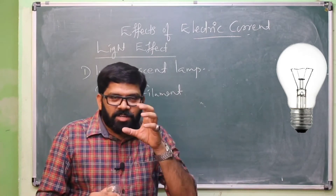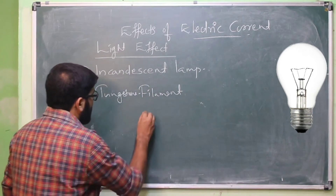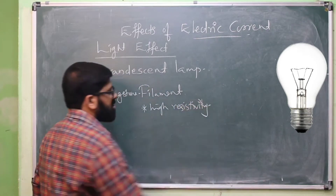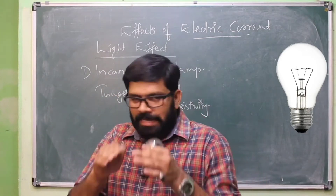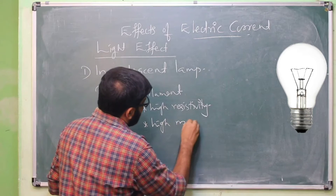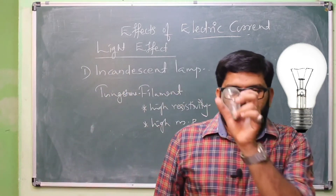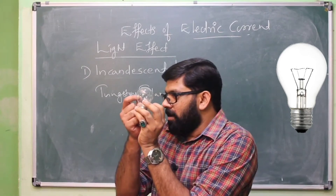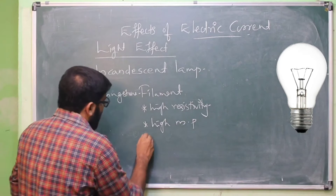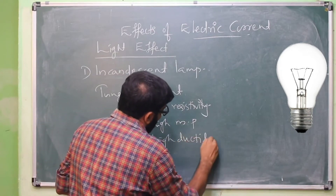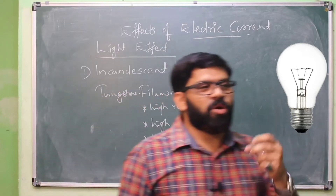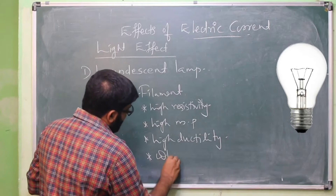Tungsten is used as the filament because of its advantages. The first advantage is it has high resistivity — high resistivity produces a red hot condition, generating heat energy. The second advantage is it has a high melting point, so it will not melt easily. The third advantage is it has high ductility — it can be drawn into a thin wire. The fourth advantage is it has the ability to emit white light in white hot condition.